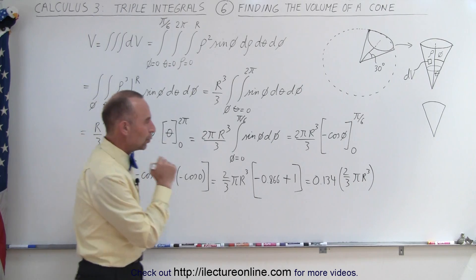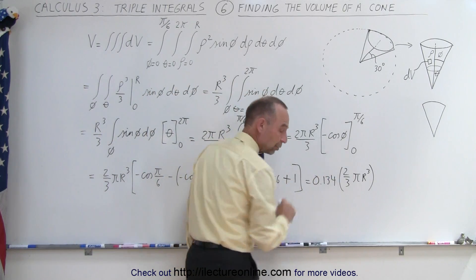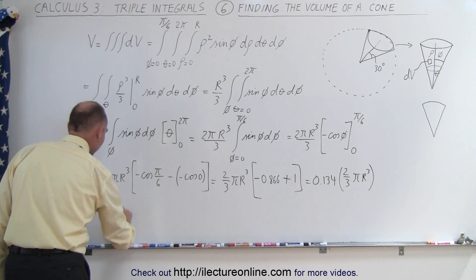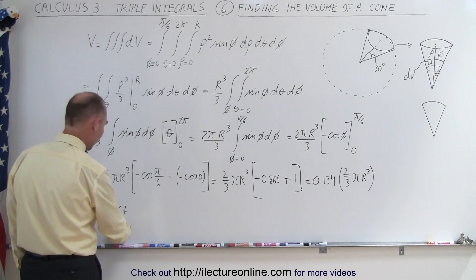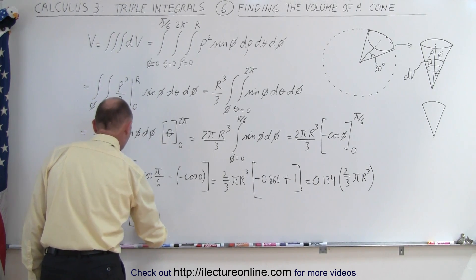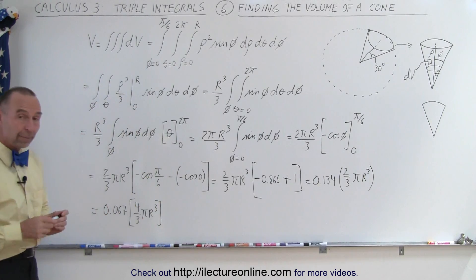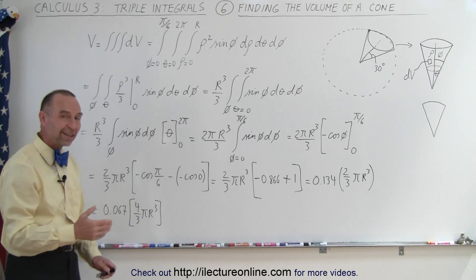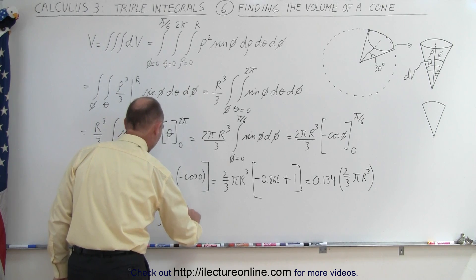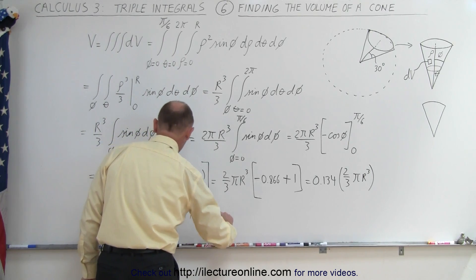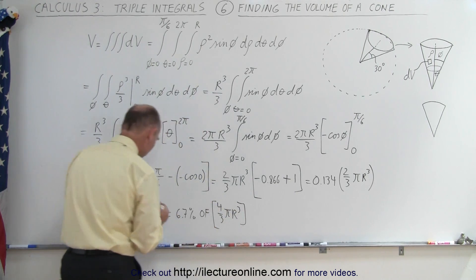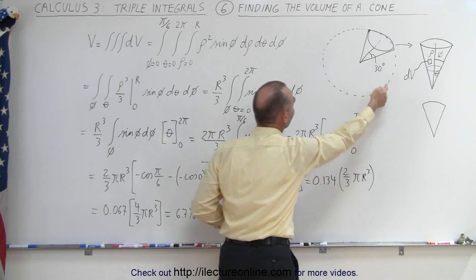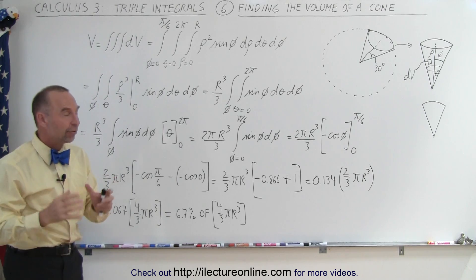Now, what we'll do is divide 0.134 by two and multiply two-thirds by two. Taking half of 0.134 gives 0.067, and doubling two-thirds gives four-thirds. So this becomes 0.067 times four-thirds pi r cubed. We write it this way because four-thirds pi r cubed is the volume of a full sphere, so the cone volume equals 0.067 times that — or 6.7 percent of the volume of a full sphere. This means that a cone-shaped section of the sphere where the angle from the center to the edge is 30 degrees has a volume about 6.7 percent of the entire sphere's volume.